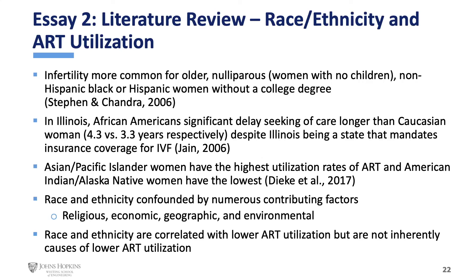On race and ethnicity: a number of studies have found various reductions in utilization from various racial groups. Even though infertility is more common for older Black or Hispanic women without college degrees, they are actually less likely to use ART — they have more infertility but less use of ART. African Americans delay care by about a year compared to their white counterparts, even in Illinois, which mandates insurance coverage for IVF. The highest utilization is by Asian Pacific Islander women and the lowest by American Indians and Alaska Natives. It's important to clarify that race and ethnicity have confounders — they're not necessarily causes of lower ART utilization, but they are easy ways to detect lower utilization.